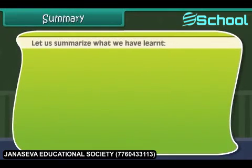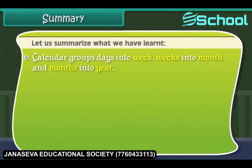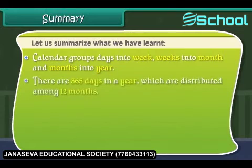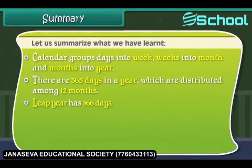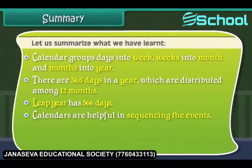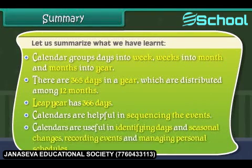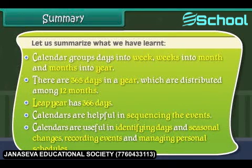Let us summarize what we have learned. A calendar groups days into weeks, weeks into months, and months into a year. There are 365 days in a year distributed among 12 months, while a leap year has 366 days. Calendars are helpful in sequencing events, identifying days and seasonal changes, recording events, and managing personal schedules.